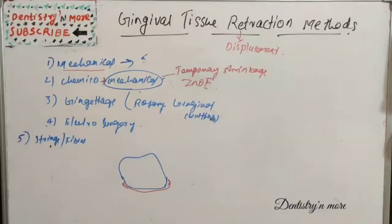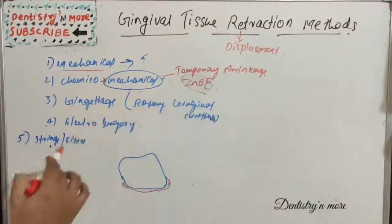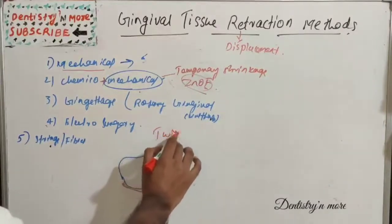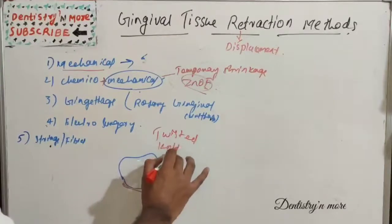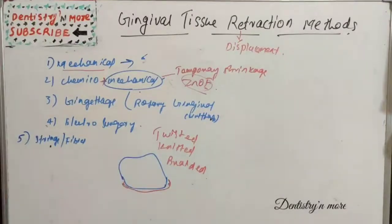Usually, cotton cords the size of floss are rolled into a creamy mixture of zinc oxide cement, and these cords are placed in the sulcus. A minimum of 48 hours is recommended for placement but not more than five to seven days. The problem is there will be gingival hemorrhage during packing. The retraction cord can be twisted, knitted, or braided type.